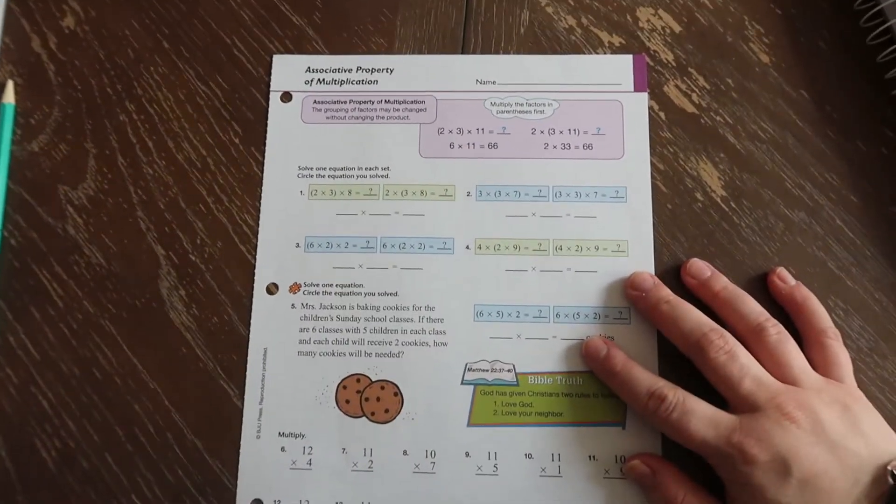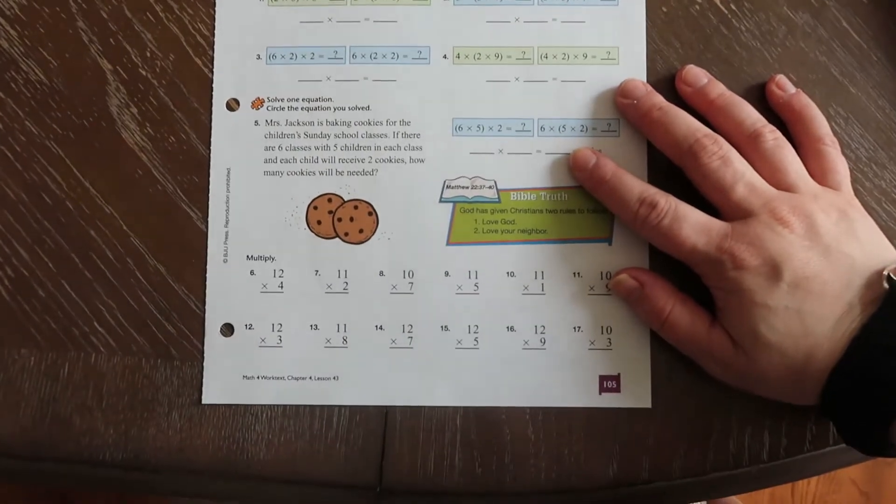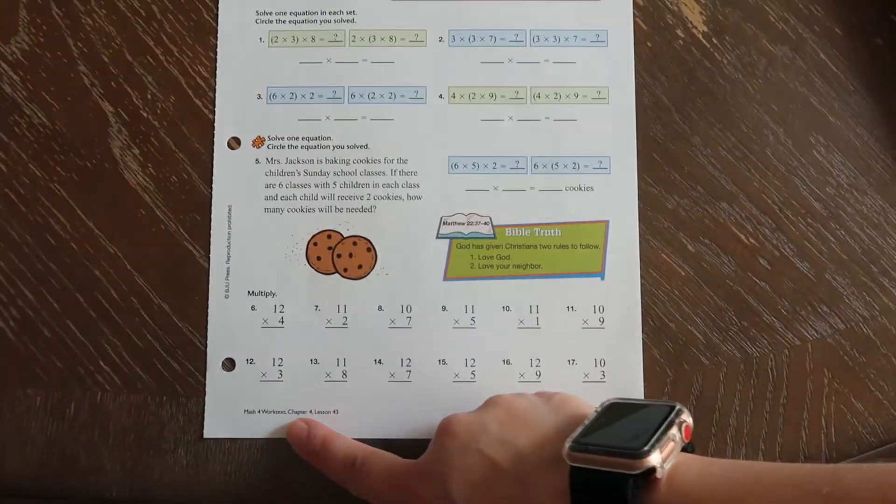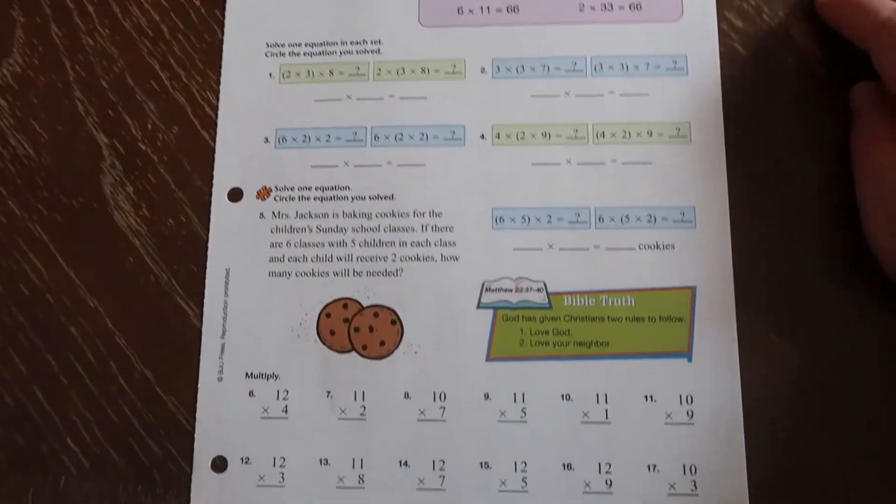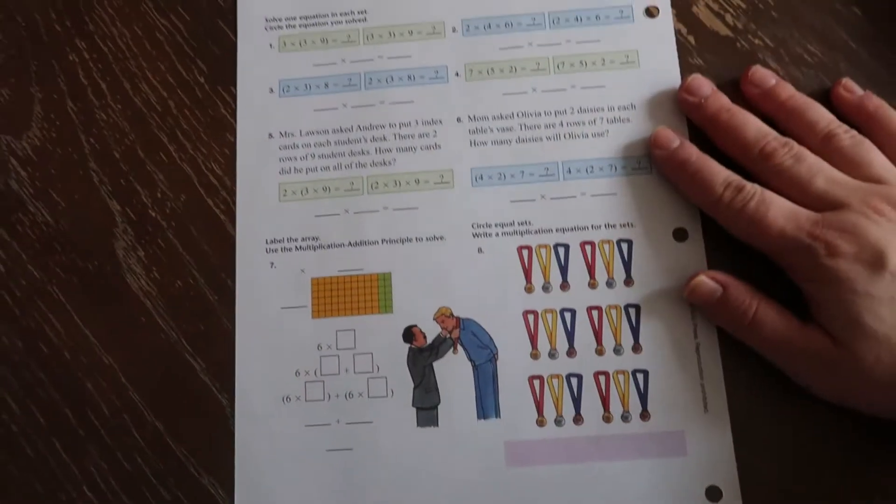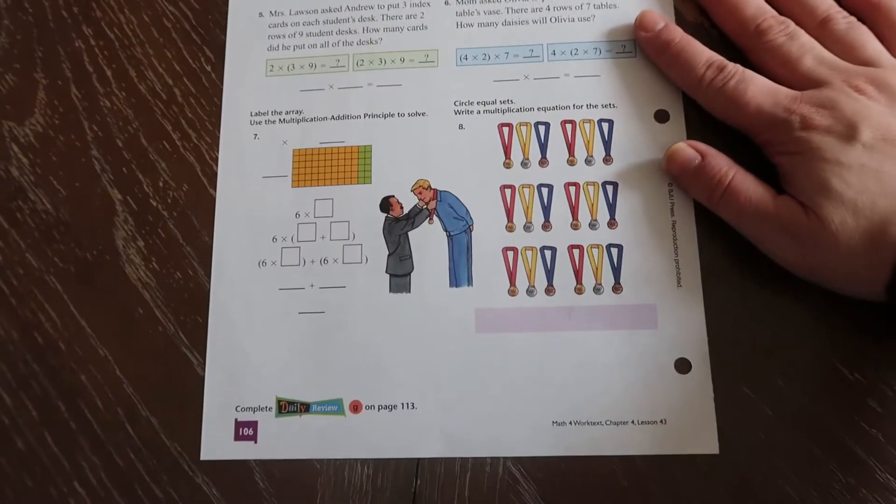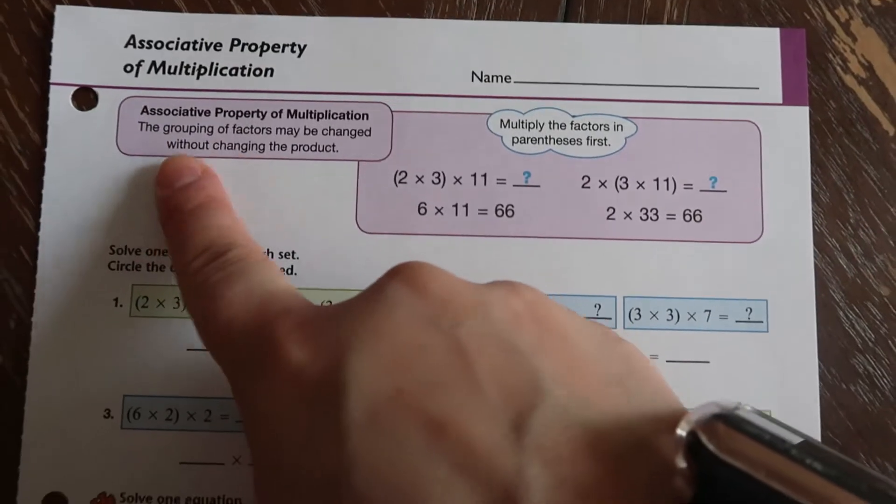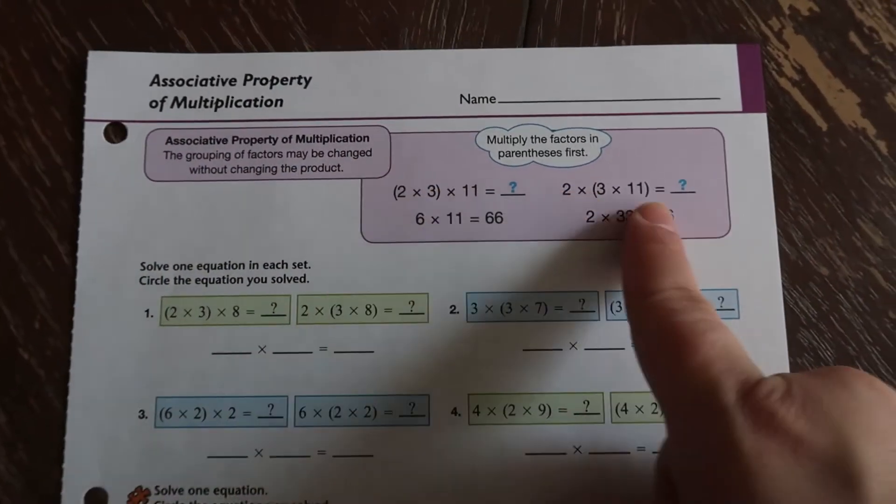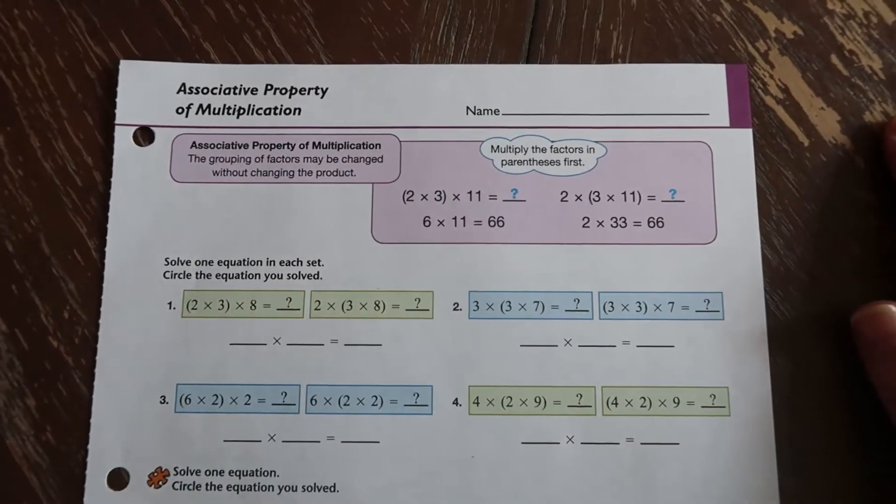So this is the worksheet that we are working on today. It's from chapter four, lesson 43 of math four. So here's what it looks like on the front. Here's what it looks like on the back.